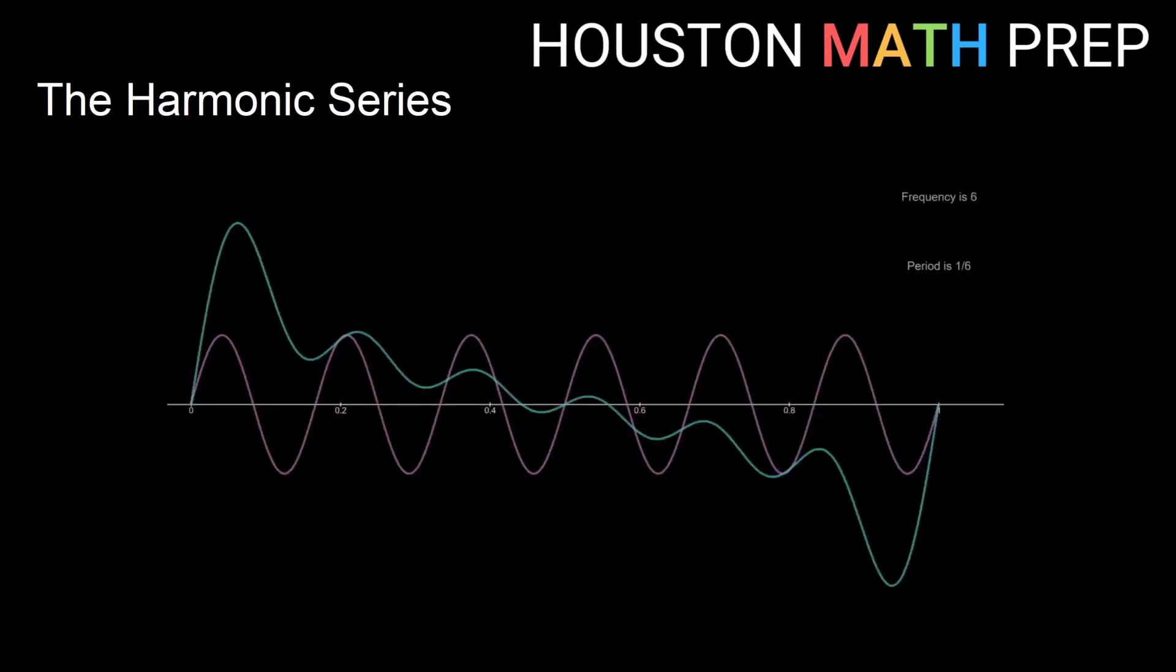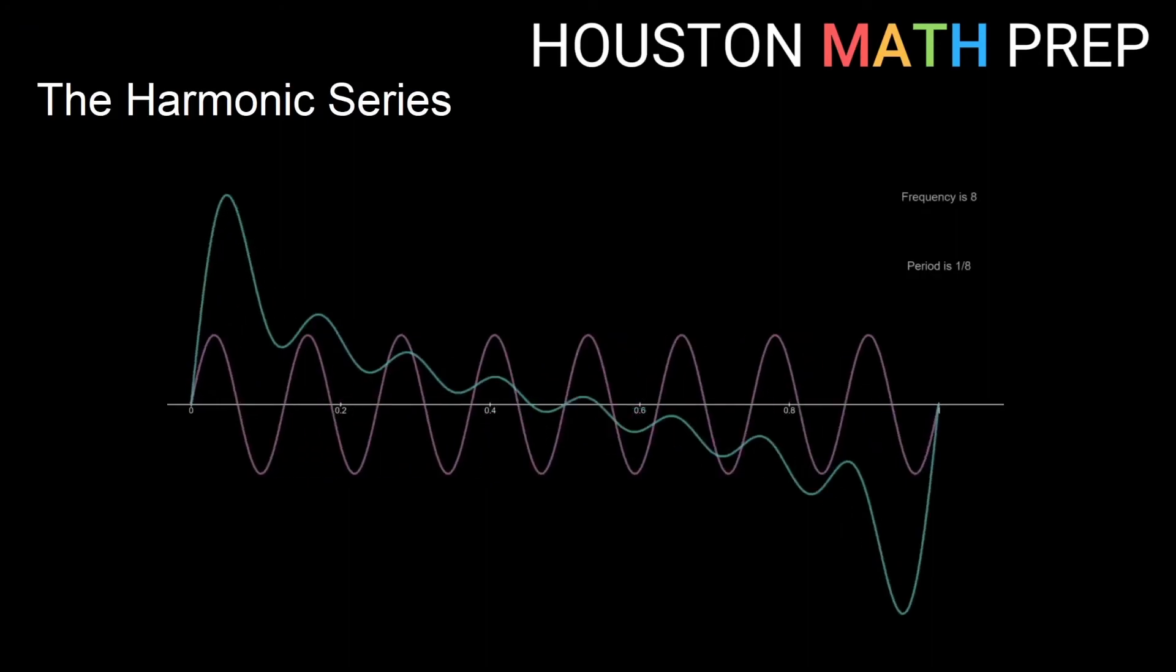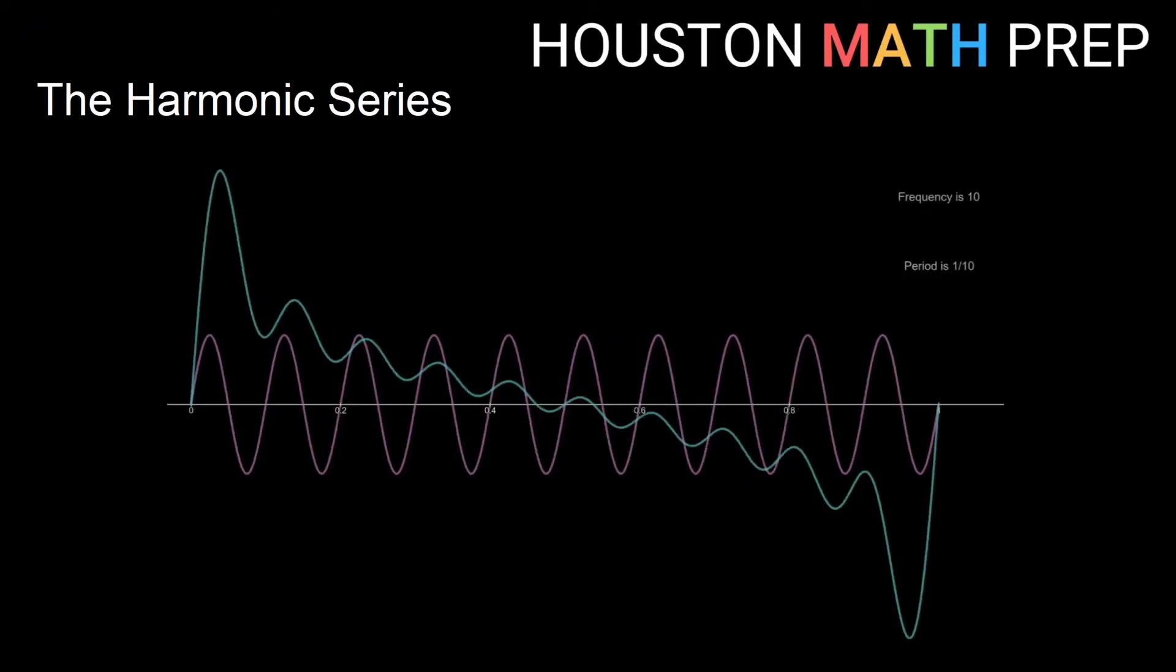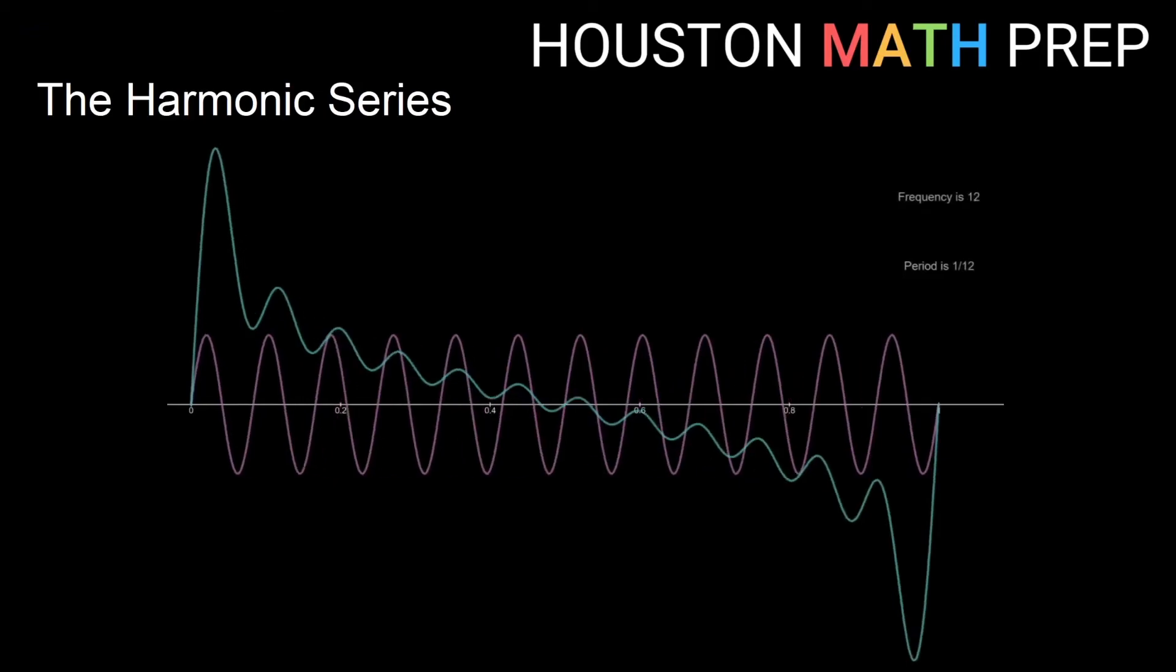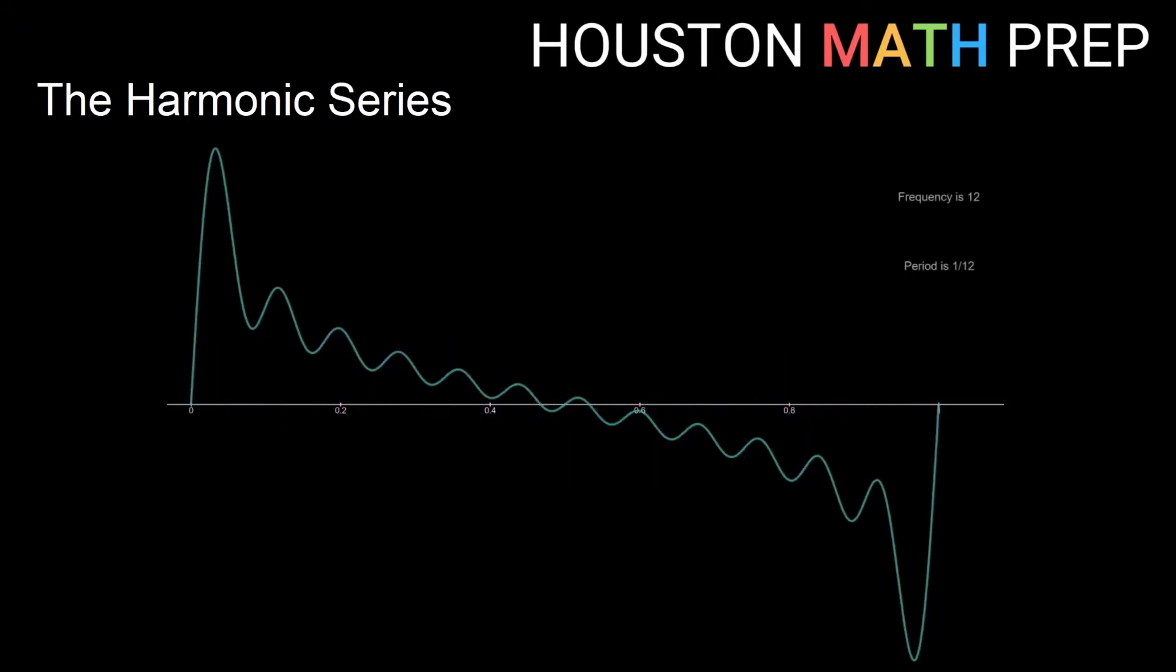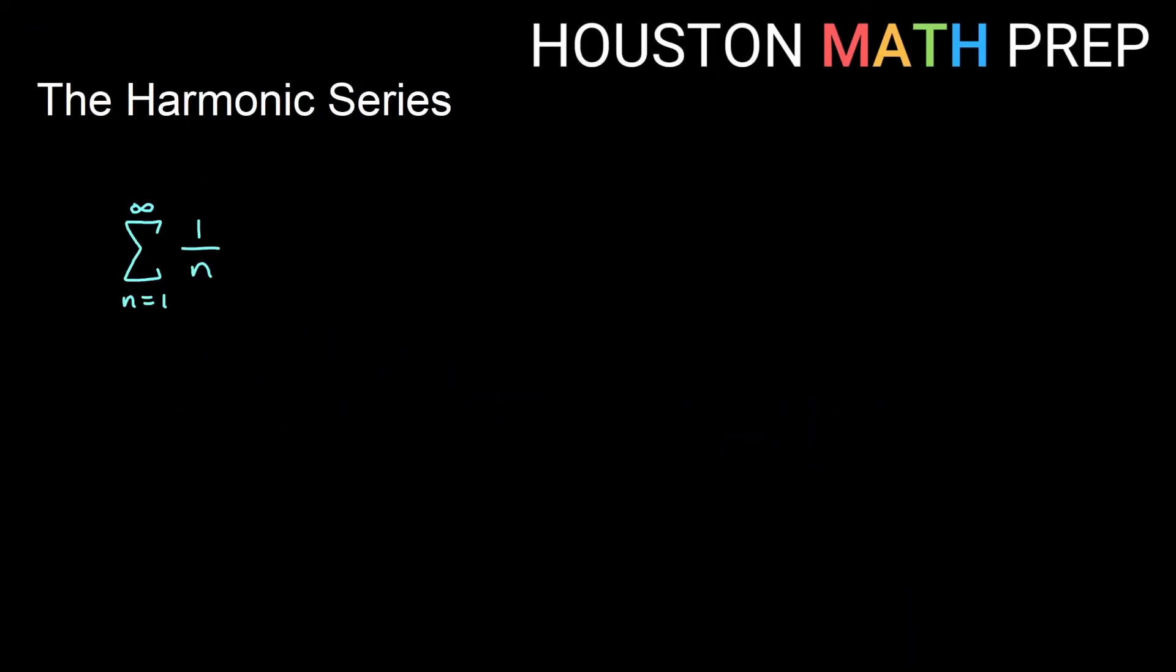Different multiples of the various frequencies called overtones all hit our ear as an overall combination of waves that gives the string, or really any variety of instrument, its unique quality like you see here. And we are here in this video to talk to you about the mathematics of the harmonic series.